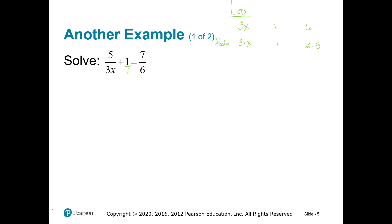I'm noticing this first denominator and this last denominator both have a 3 — well, that second denominator also needs the 3. I'm noticing this first denominator has a solo x, so I guess denominators 2 and 3 also need that solo x. And I'm noticing this last denominator has a 2, so I guess these first two denominators also need a 2. If I multiply everything by a 1, it doesn't really change anything, which means our LCD is made up of a 2, a 3, and an x — or simply 6x.